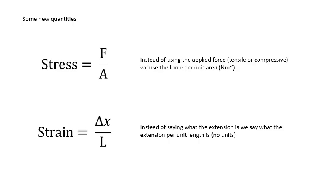Instead of using the extension delta X, we use the strain. The strain is the extension per unit length — the extension divided by the original length. Because delta X and L are both in metres, strain has no units; the units cancel. So instead of force F and extension delta X, we use stress and strain.